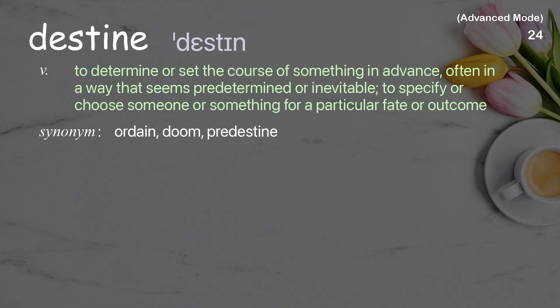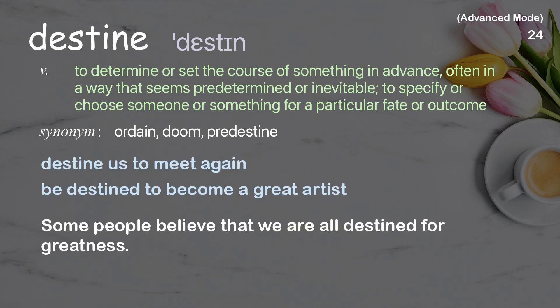Destined: To determine or set the course of something in advance, often in a way that seems predetermined or inevitable; to specify or choose someone or something for a particular fate or outcome. Examples: Destined to meet again; be destined to become a great artist. Some people believe that we are all destined for greatness.